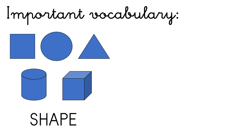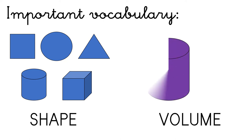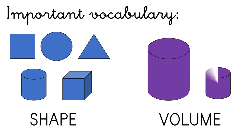Or a cube. The other important vocabulary is the word volume, i.e. the amount of space that an object occupies. For example, this cylinder occupies more space — it has more volume than this small cylinder.